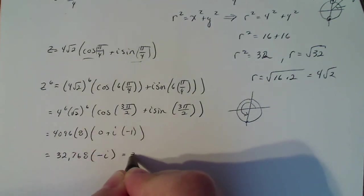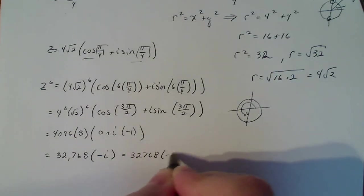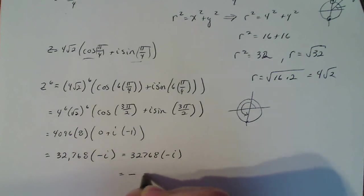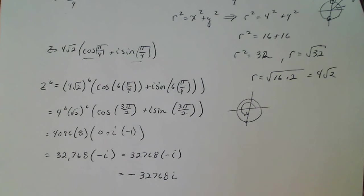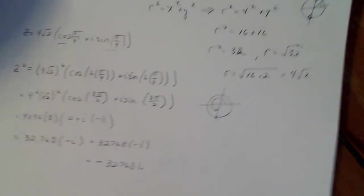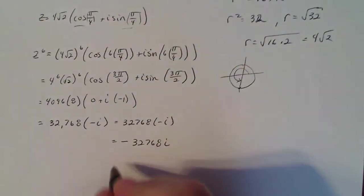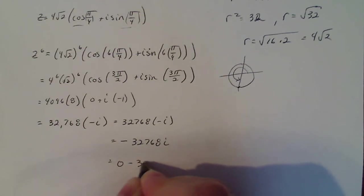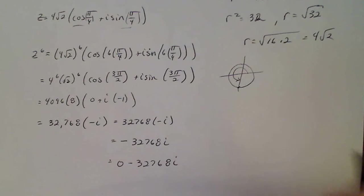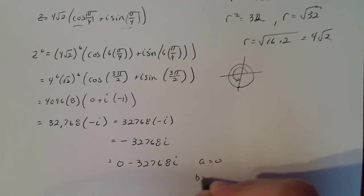So in the end, I get 32,768 times minus i, which is minus 32,768 times i. Now they say write this in a plus bi form. Well, that is an a plus bi form because the a value is 0. But just to be thorough, I'm going to write this as 0 minus 32,768 times i, where a is equal to 0 and b is equal to minus 32,768.